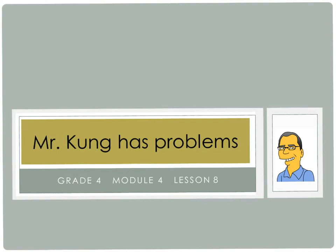Hello, and welcome to another episode of Mr. Kung Has Problems. Today we're working on Module 4, Lesson 8. We're going to look at how we can identify and measure angles as turns and recognize them in various different kinds of contexts, like story problems.